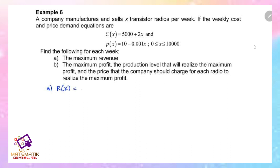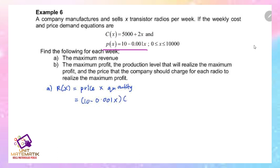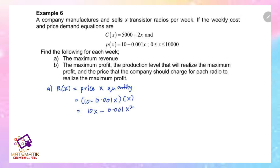For part (a), the revenue function equals price multiplied by quantity. Price is already given as 10 - 0.001x, multiplied by quantity x, giving R(x) = 10x - 0.001x².